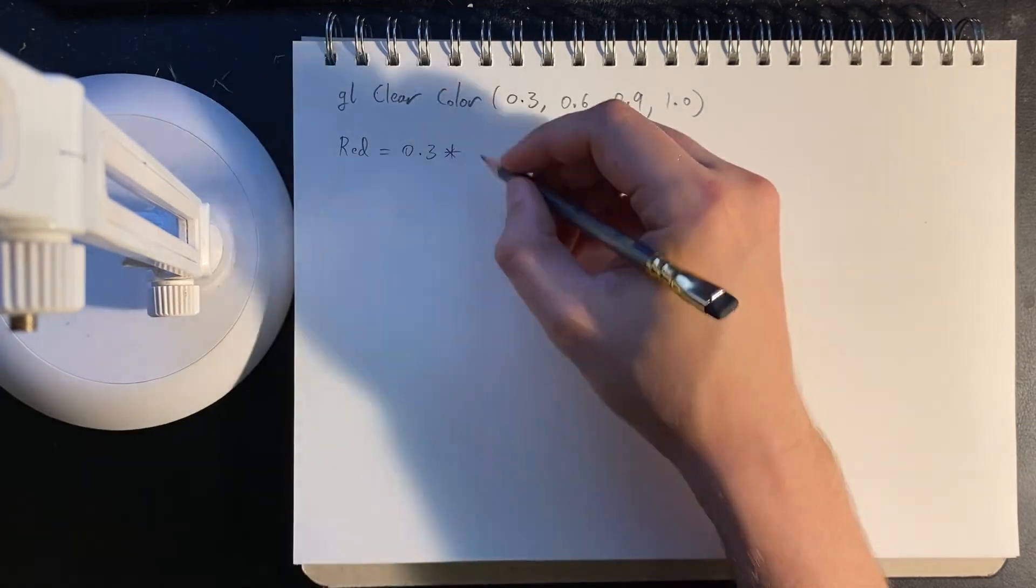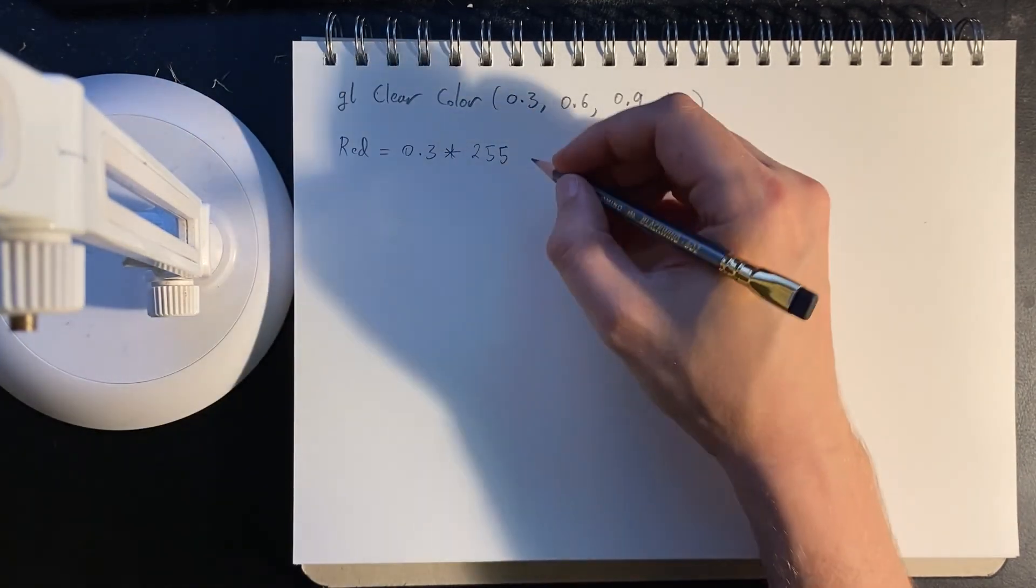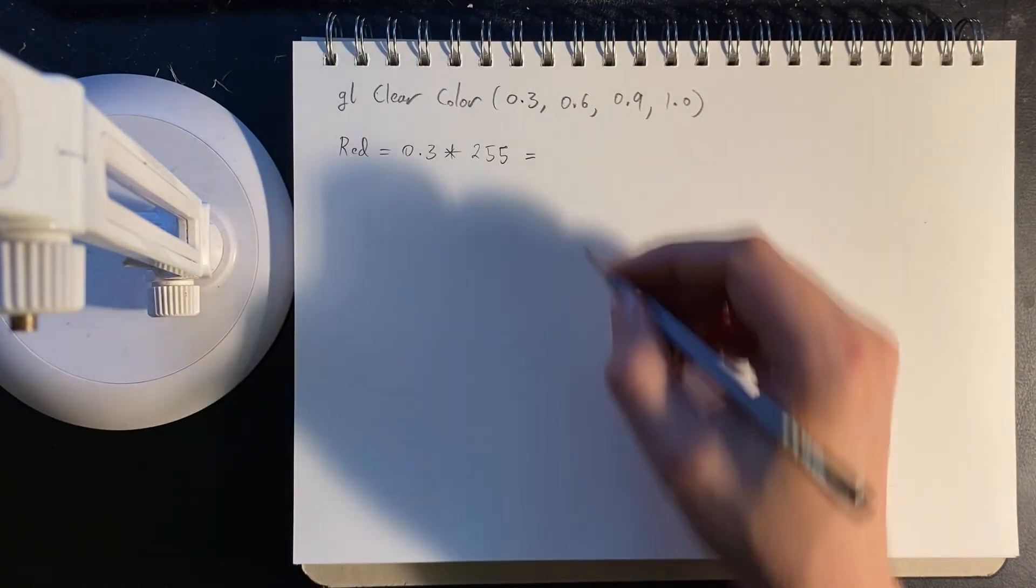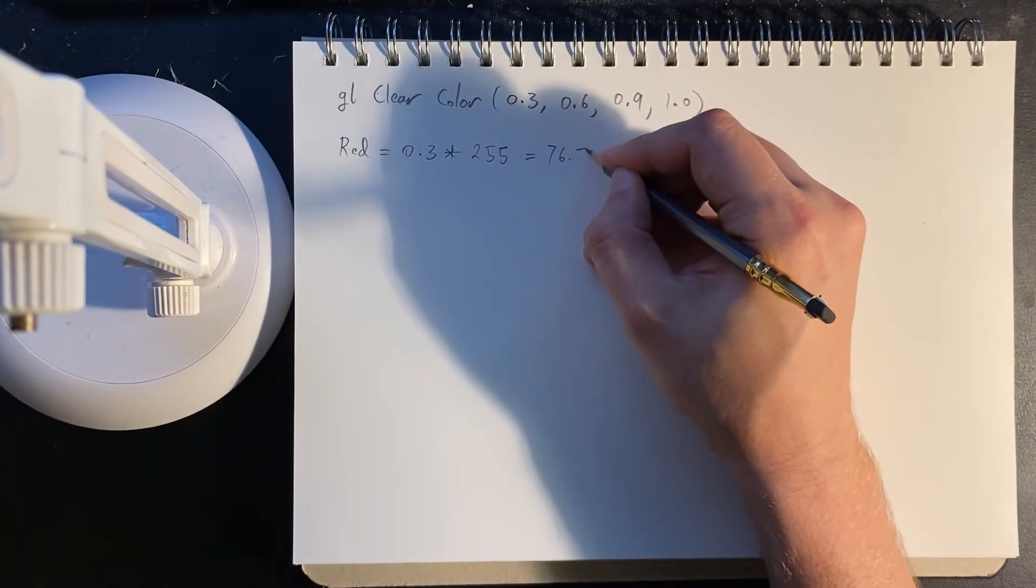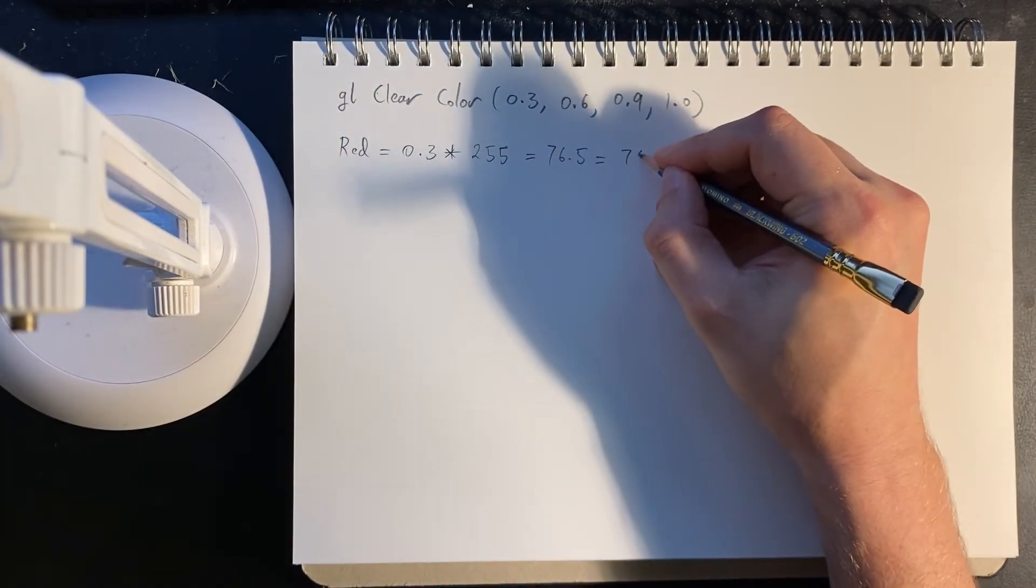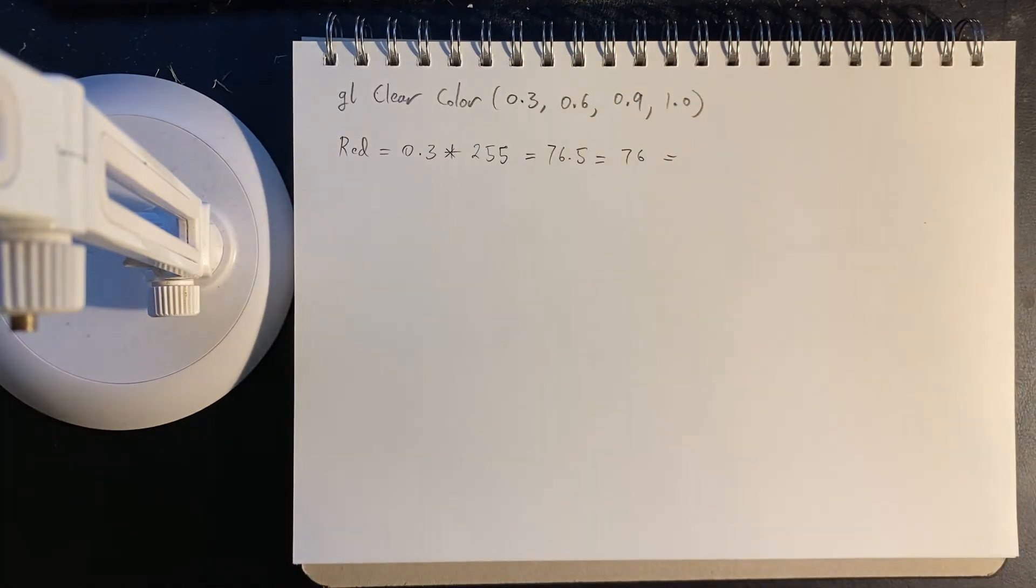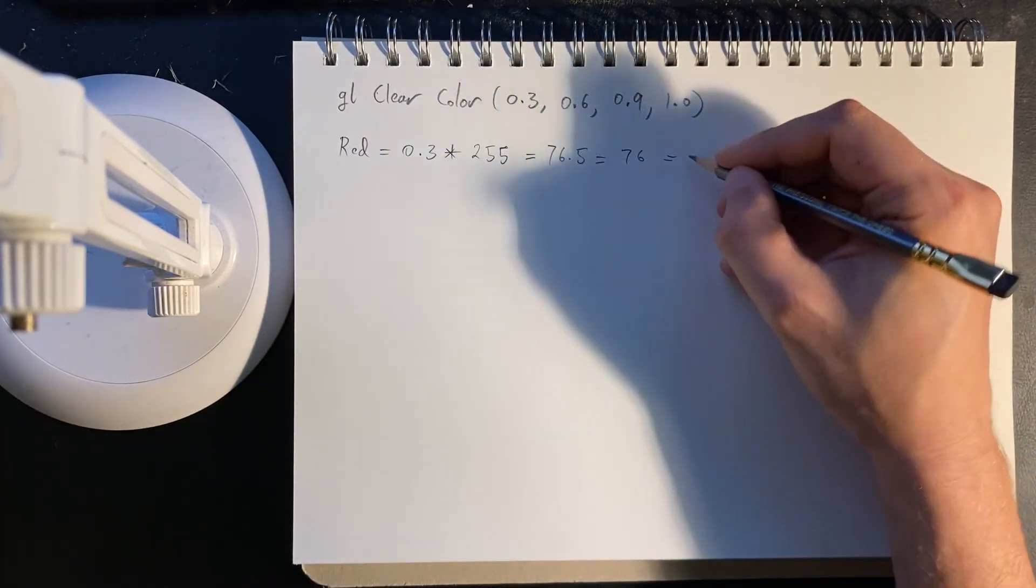So for red, we have 0.3. That's a scaling factor. So it's 0.3 times 255, which is the largest 8-bit number that we can have. And that comes out to 76.5. It's really up to the graphics card, how they interpret that. Let's just assume we're always rounding down on a 0.5. And then we need to write that in 32 bits.